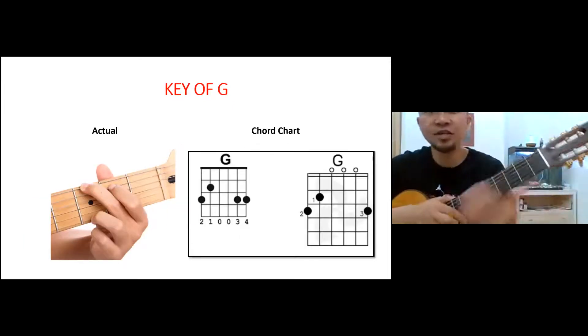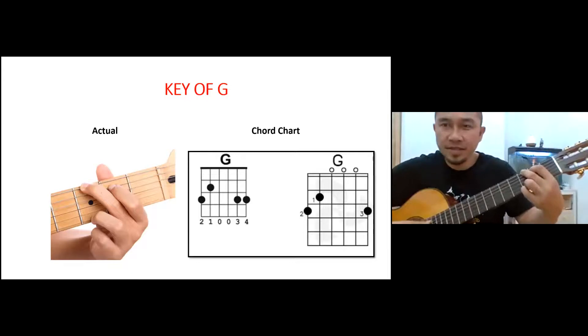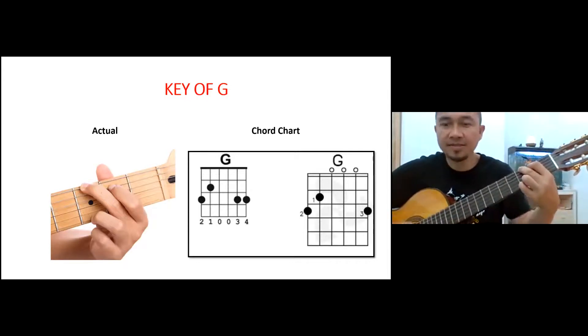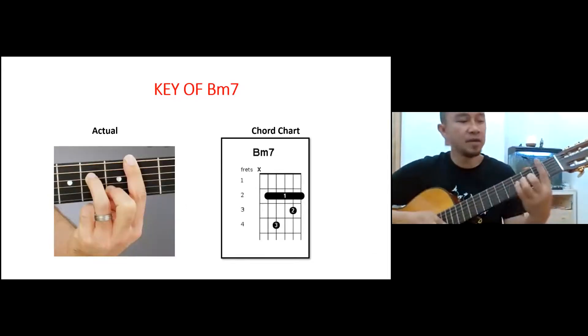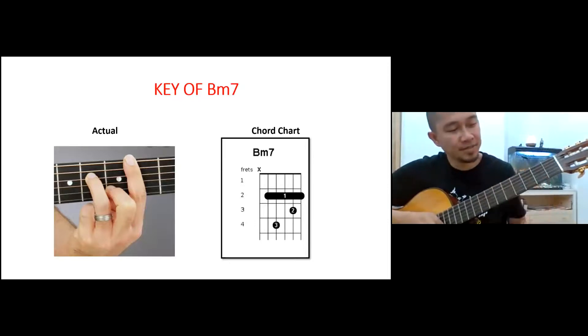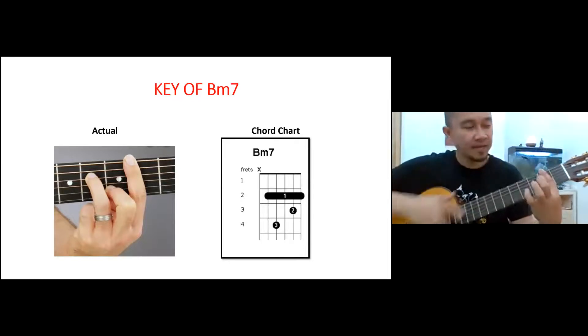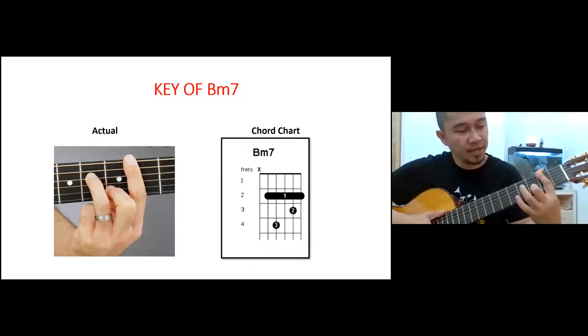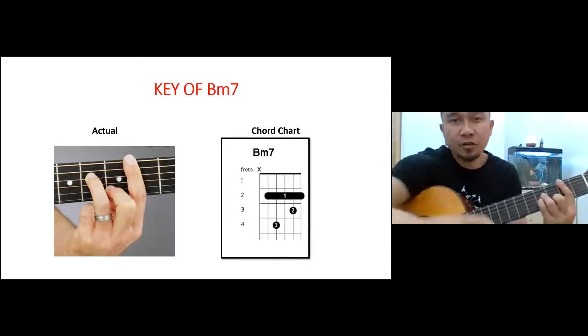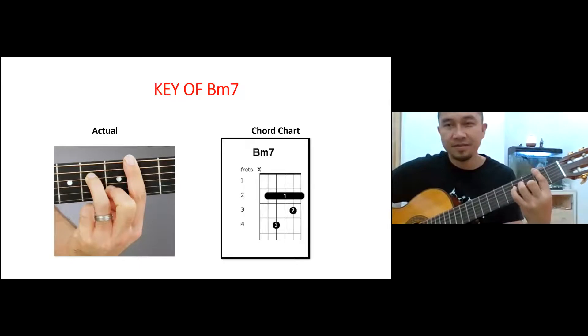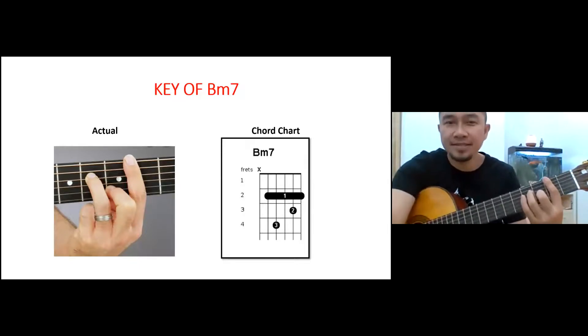And G, of course, like this. And B minor. Oh, B minor. Okay, second fret. Clip or bar. And then 1, 2, 3, 4. Okay, B minor 7, okay? So either B minor, B minor 7. Easy.